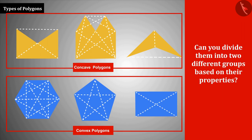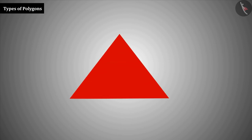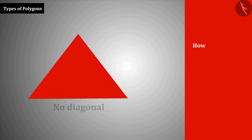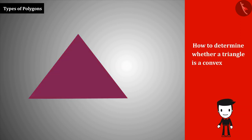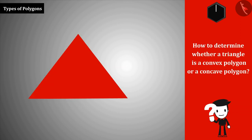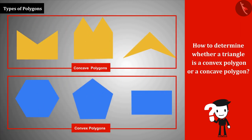But if we look at a triangle, there is no diagonal. So how do we determine whether a triangle is a convex or a concave polygon? To understand this, let's look at these polygons once again. If we take any two random points in the interior of these polygons and connect them...